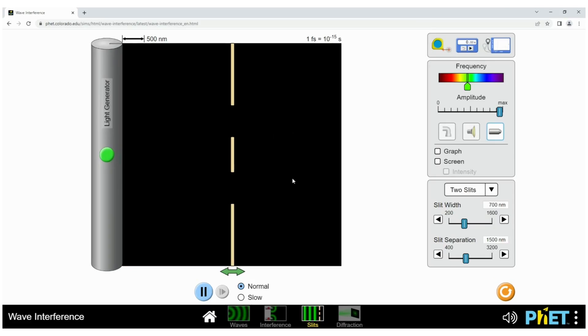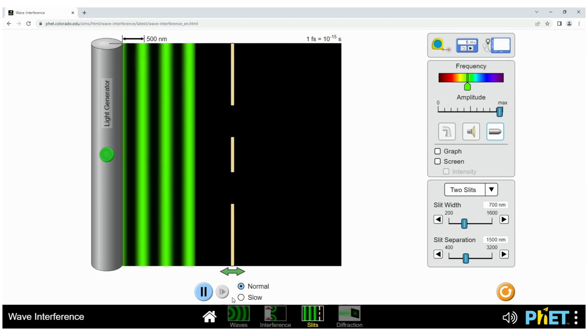In double-slit experiment, if the laser beam acts as particles, it should make two lines on the screen, but it creates a pattern in the screen which is similar to the pattern created by ripple tank due to two vibrating sources.